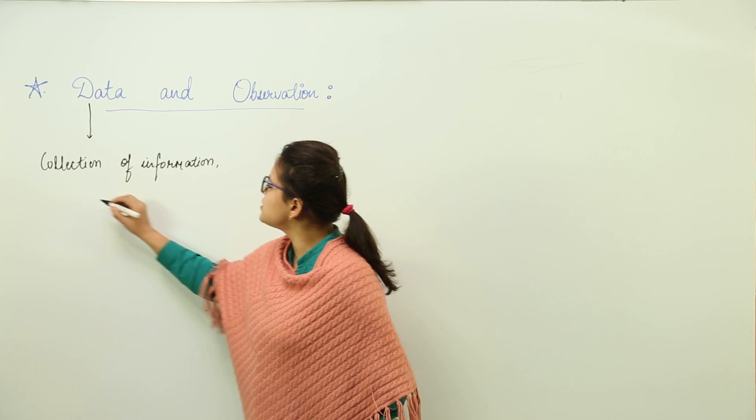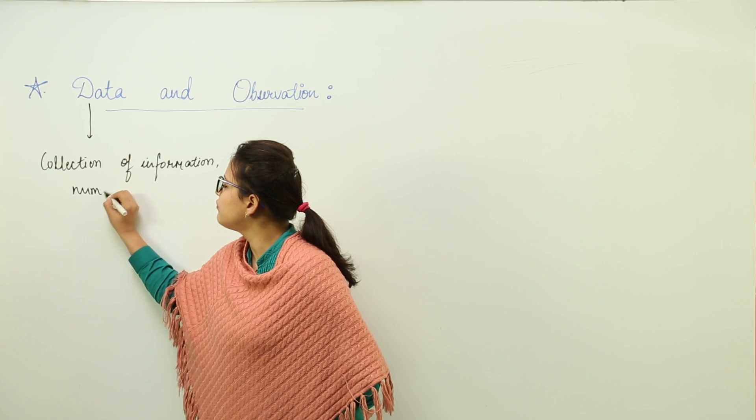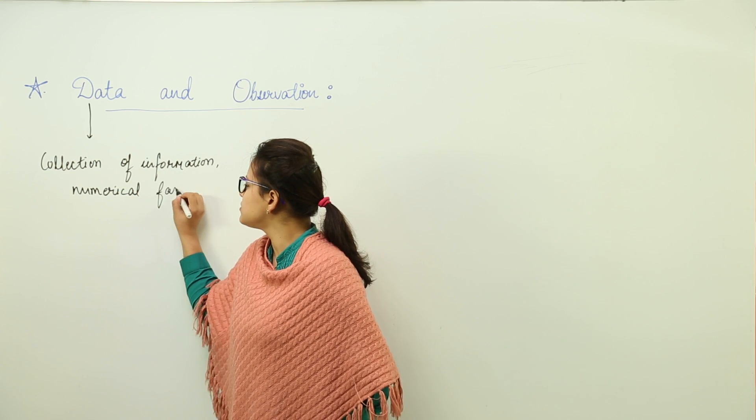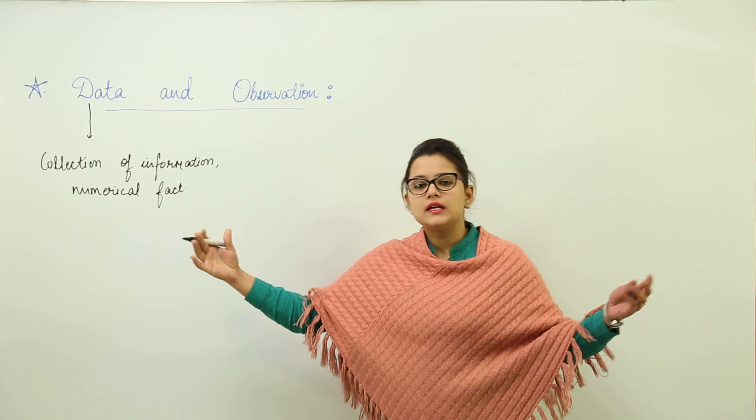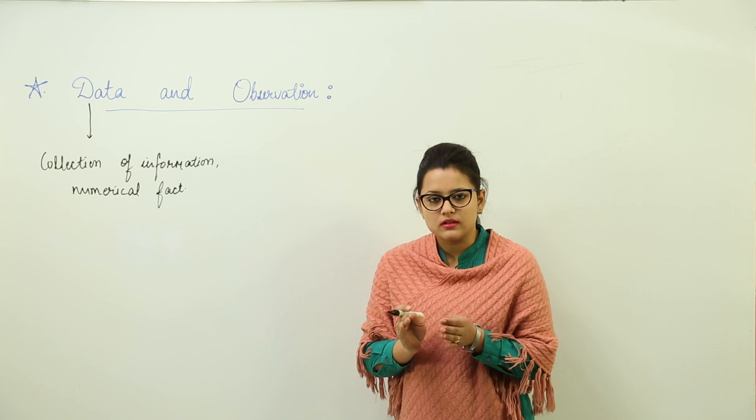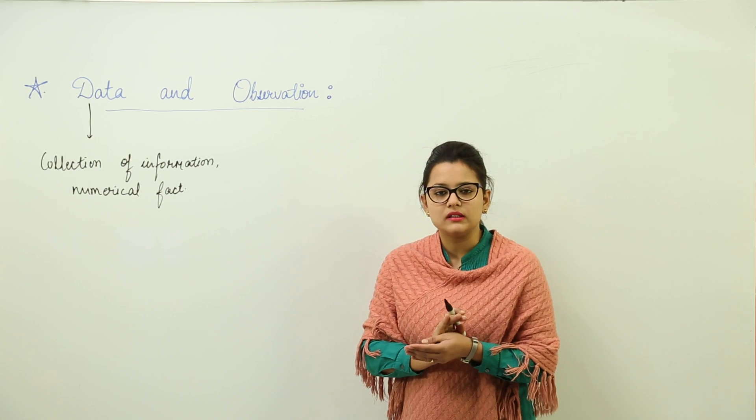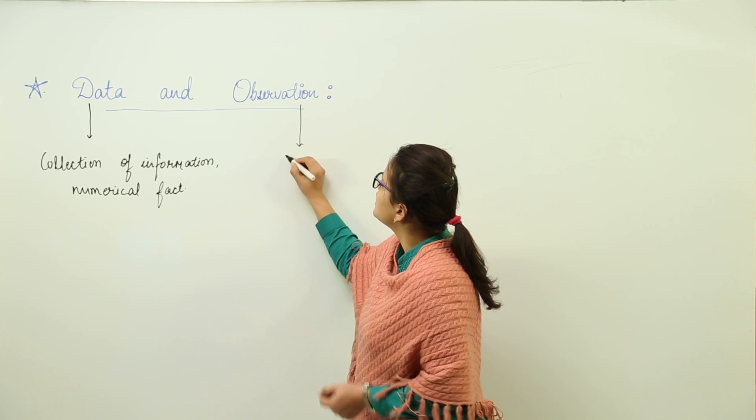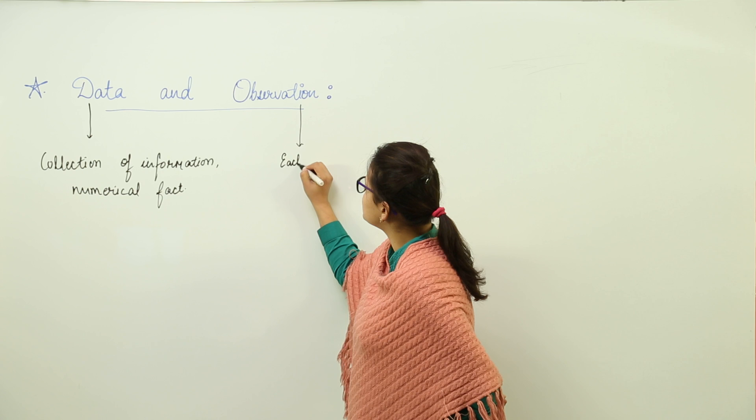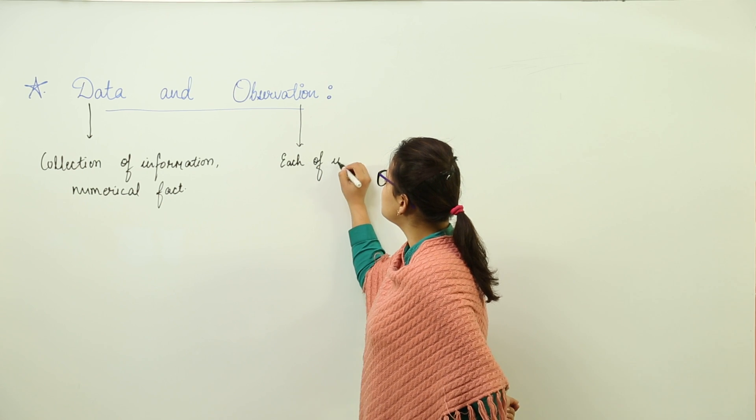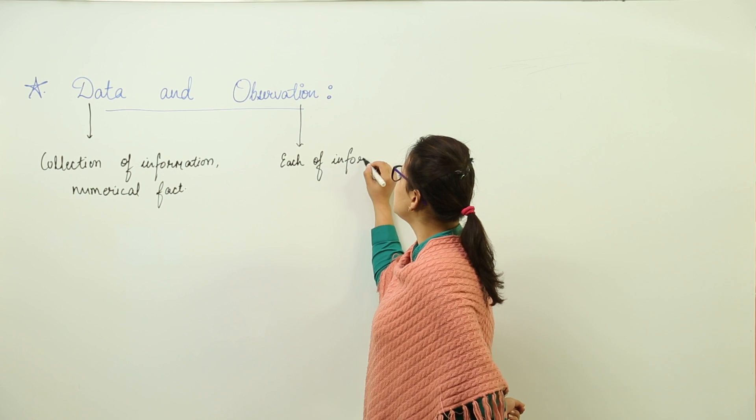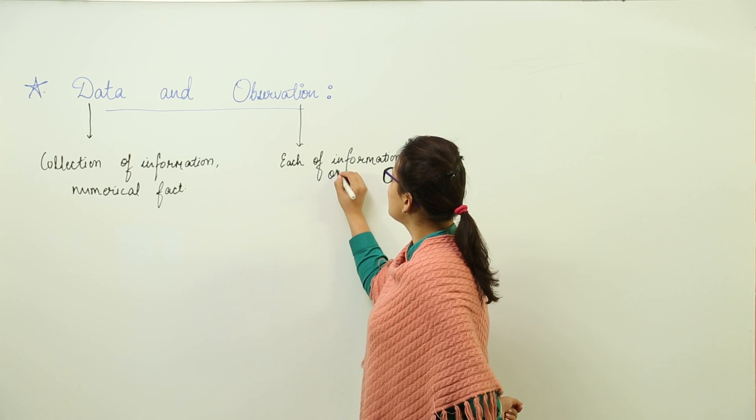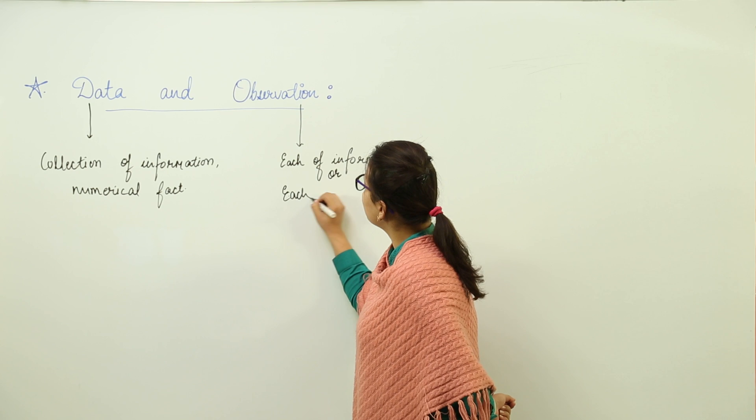Then what is observation? See, the collection of various values together is known as data, but whereas observation is each of the information, or you can say each of the numerical fact. So if I write each of the information or each numerical fact, that would refer to my observation.